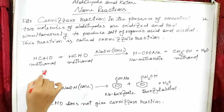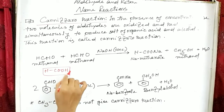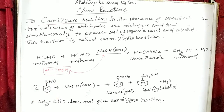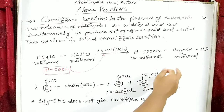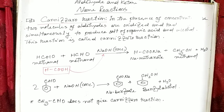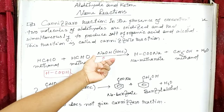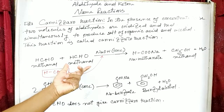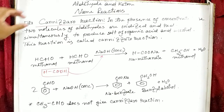Methanol is oxidized to produce methanoic acid. This methanoic acid then reacts with the sodium hydroxide to produce sodium methanoate. The second methanol molecule is reduced to produce methanol (methyl alcohol). So the statement of Cannizzaro reaction is: in the presence of concentrated base like sodium hydroxide, two molecules of aldehyde are simultaneously oxidized and reduced to produce the salt of a fatty acid and an alcohol. This reaction is known as the Cannizzaro reaction.